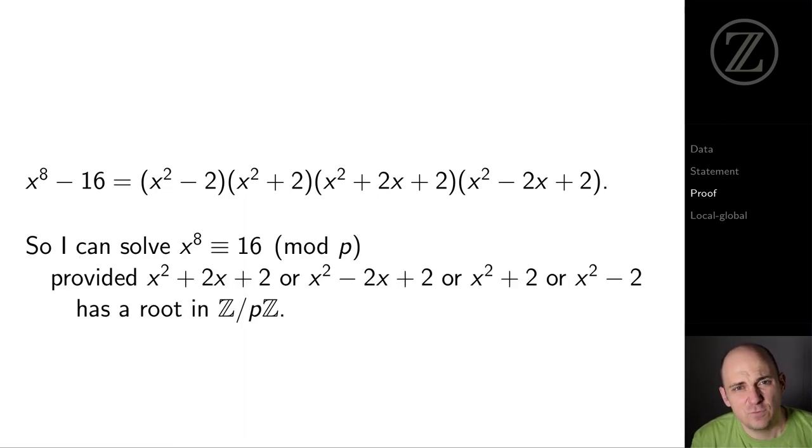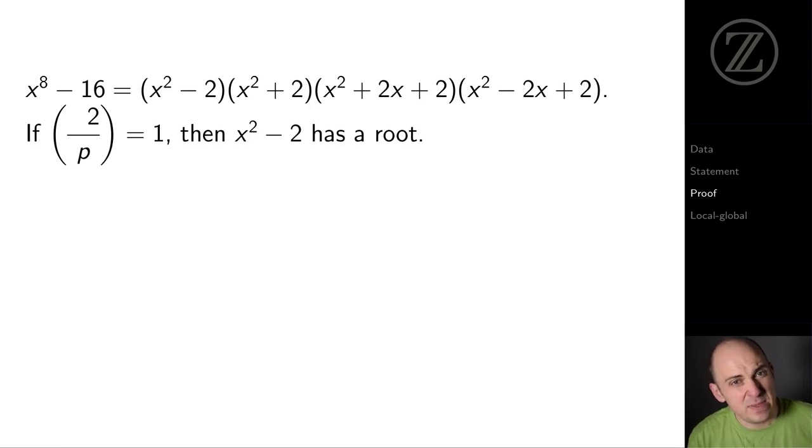So all I've got to do is for every prime p, find a root of one of those four polynomials. Let's think about the possibilities. If (2/p) = 1, that means 2 is a square mod p, and I can find a root of x squared minus 2, and then we're done.